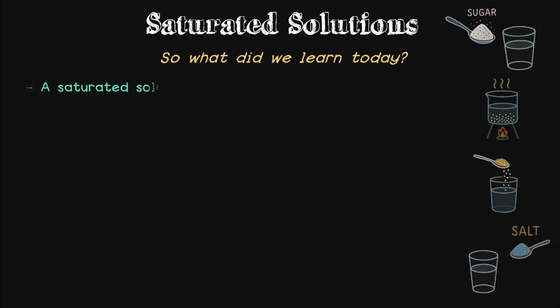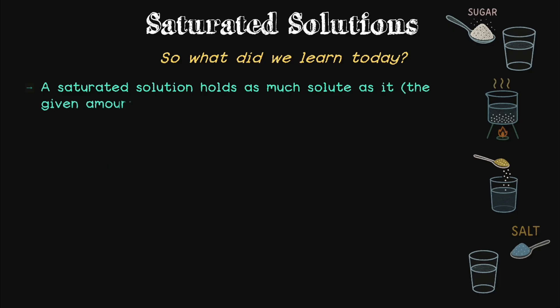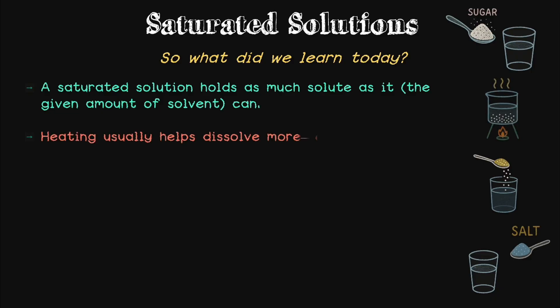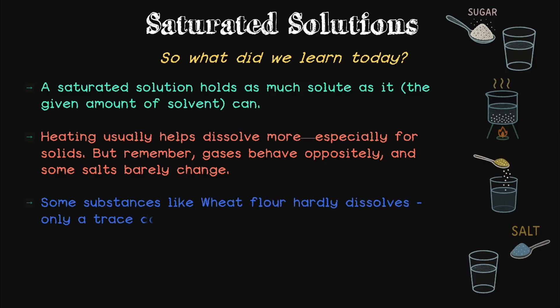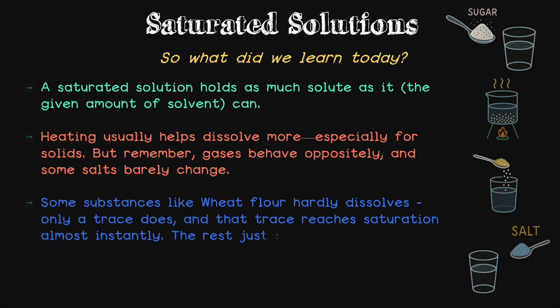So, what did we learn today? We learned that a saturated solution holds as much solute as the given amount of solvent can. We also learned that heating usually helps dissolve more, especially for solids. But remember, gases behave quite oppositely and some salts barely change. We also learned that substances like wheat flour — or you can even try chalk powder — hardly dissolve. Only a trace amount does, and that trace reaches saturation almost instantly. The rest just settles in the water or whatever solvent you are using.